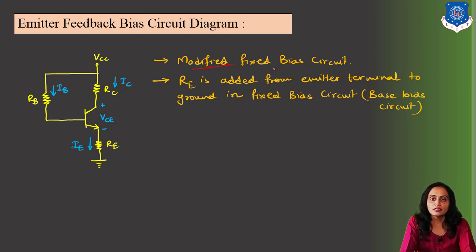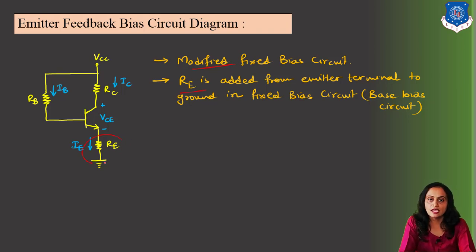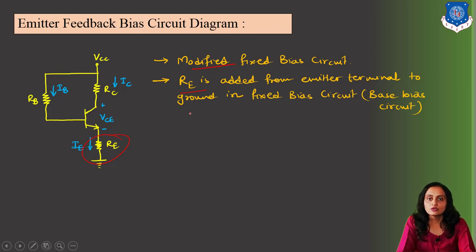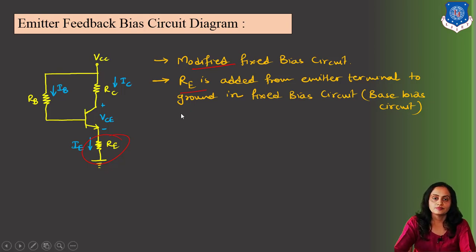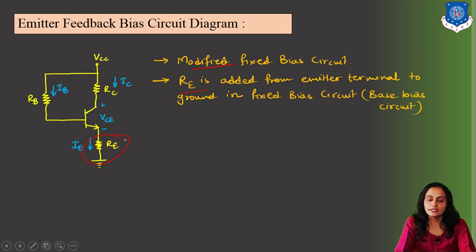Because the fixed bias circuit diagram is modified — we have just added this emitter resistance between the emitter terminal and the ground. So this is also referred to as the modified fixed bias circuit or base bias circuit. And as we have connected this RE, that is why it is called the emitter feedback bias circuit.